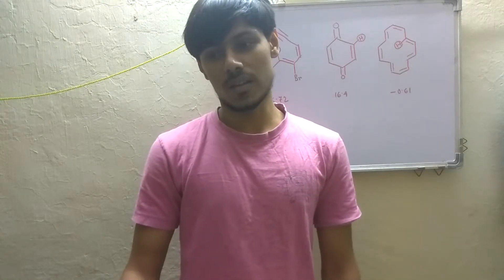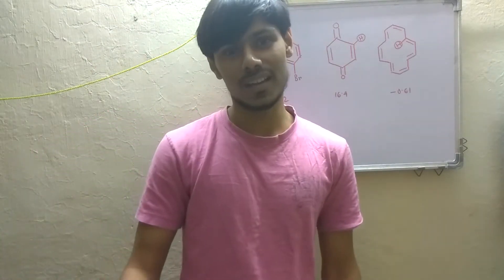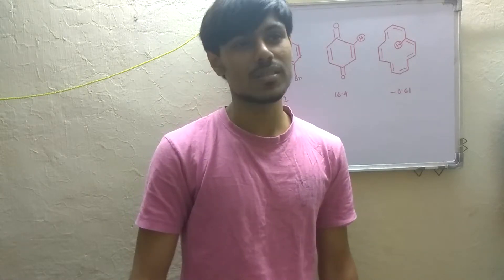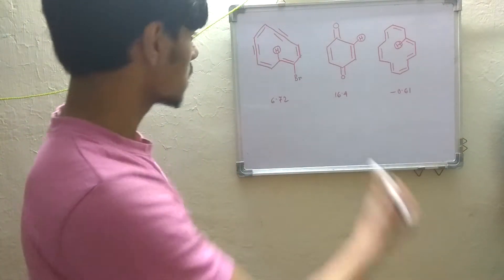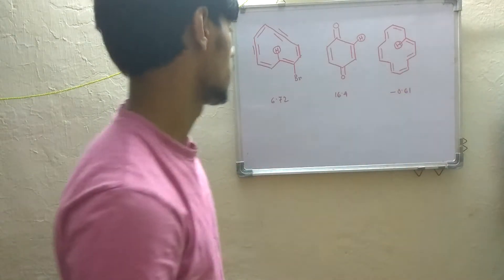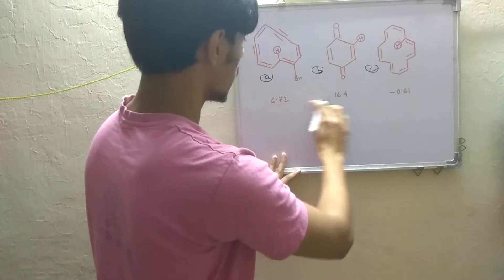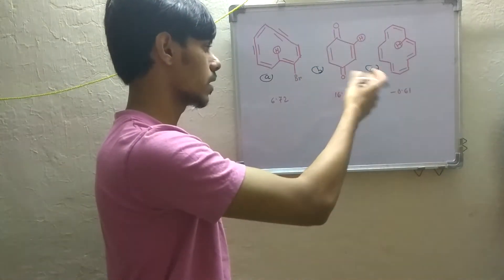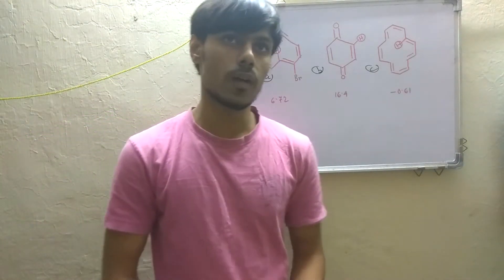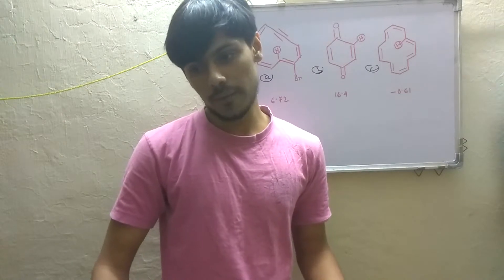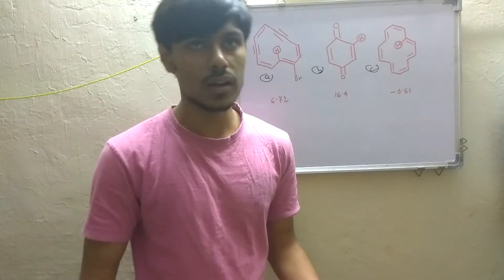Previously I made a video on a requested question on the CSIR exam, but the viewer requested a CSIR exam December 2017 question specifically. So now I am making that requested video. This is a question on NMR chemical shift. Three compounds are given — A, B, and C — and their chemical shifts are given. You have to match which chemical shift belongs to which compound. To solve this question, you have to be familiar with the concept of how aromaticity affects the chemical shift of any proton.